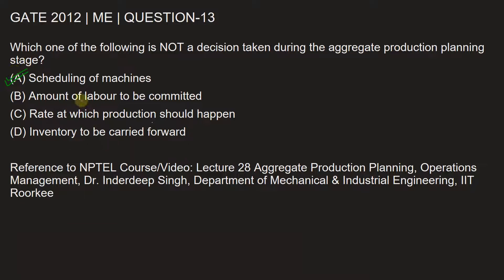The decision that is not taken during the aggregate production planning stage is scheduling of machines, while all other three are decisions taken during aggregate production planning. To learn more, you can refer to the NPTEL video lecture 28 on aggregate production planning from the course Operations Management by Dr. Inderdeep Singh, Department of Mechanical and Industrial Engineering, IIT Roorkee. I hope this explanation helps you clear your doubt. Thank you.